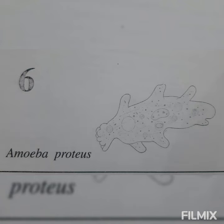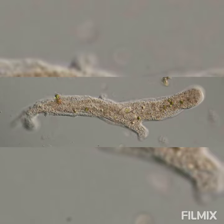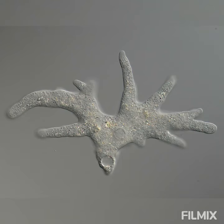Theories of amoeboid movement: the rolling movement theory. Jennings, with his investigations on Amoeba verrucosa, explained that amoeboid movement takes place due to rolling movement of the body surface, comparable to the rolling movement of a fluid-filled sac on a substratum. He observed in Amoeba verrucosa that a carbon particle on the amoeba's upper surface first passes forward,